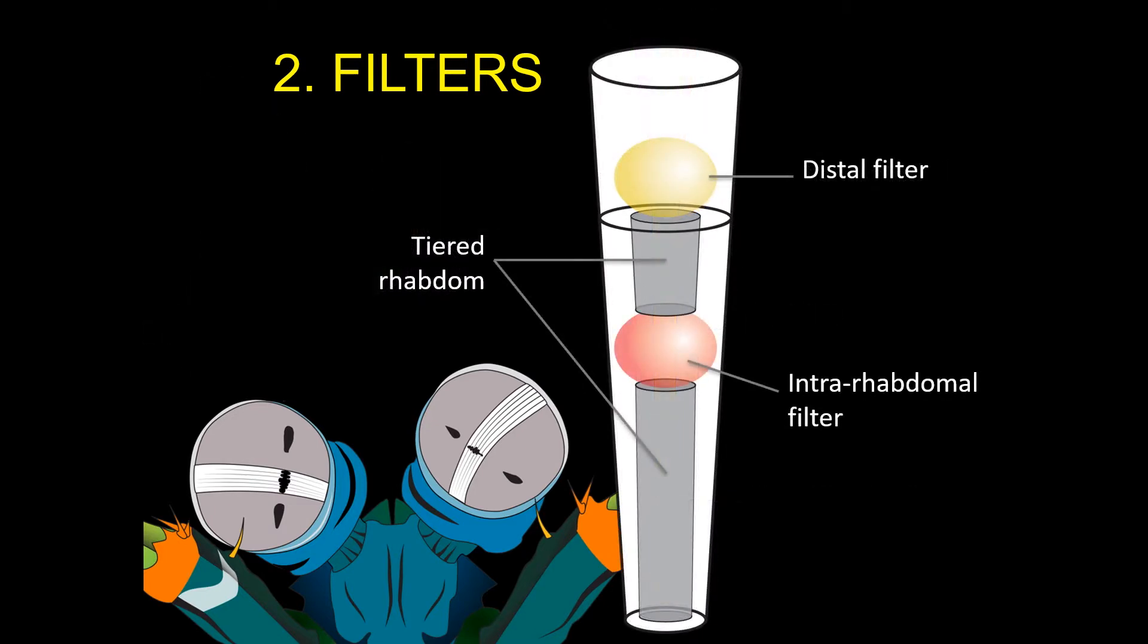Adult mantis shrimp use a unique two-filter system in their eyes. The first colorful filter sits on top of the rhabdom, while the second one bisects the rhabdom into two layers, or tiers, so that each tier may be tuned to different wavelengths by serial filtering. This is a feature of the complex color vision system known in adult mantis shrimp.